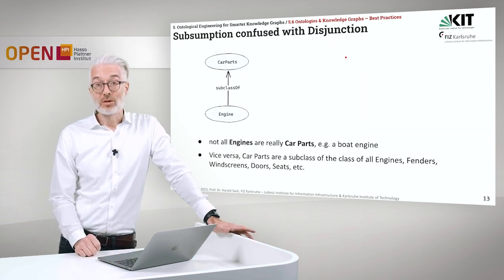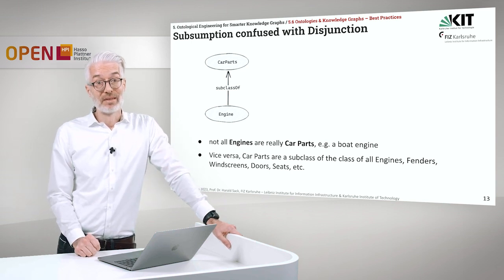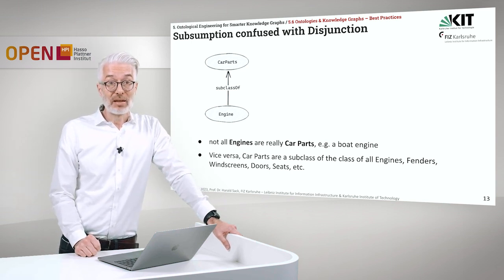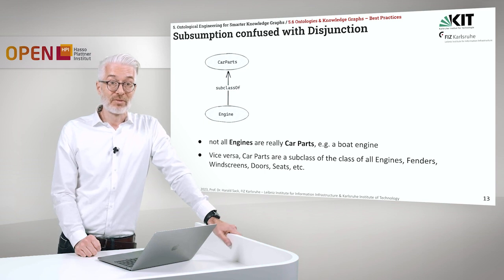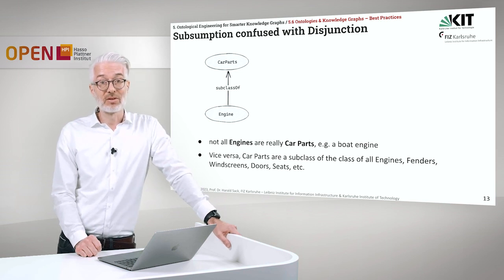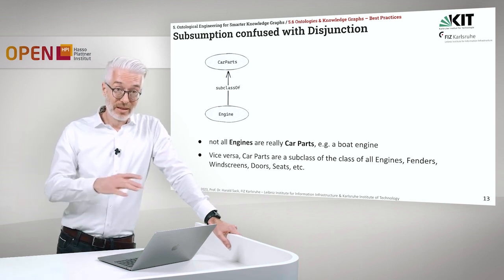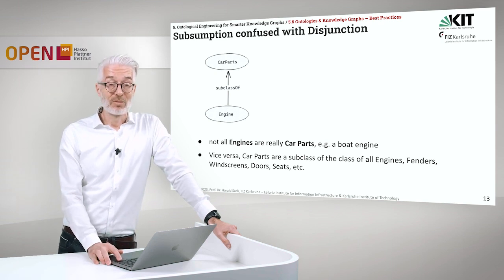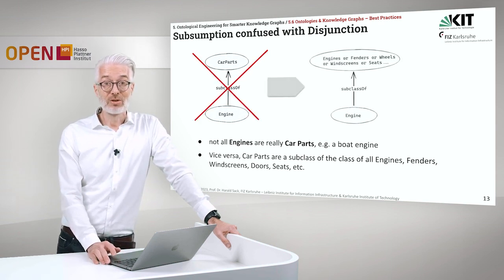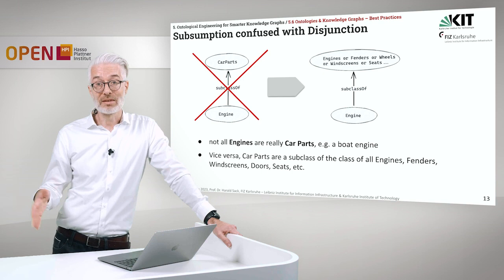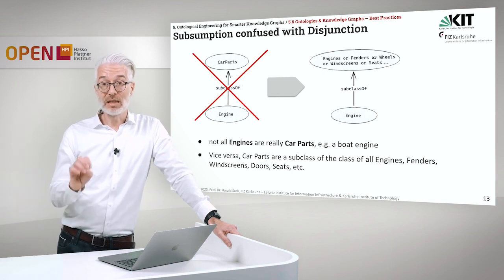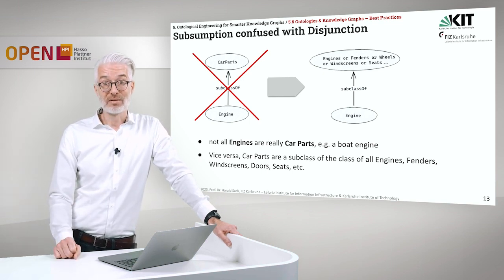Next confusion: disjunction. If I say engine is a subclass of car parts — not all engines are car parts; take a boat engine, for example. Vice versa, car parts as a subclass of all engines would include fenders, windscreens, doors and seats — that's also not the best way to model it. What you should say is that an engine might be a subclass of all engines, and fenders, wheels, windscreens, seats are really parts of a car — that might then fit quite well.